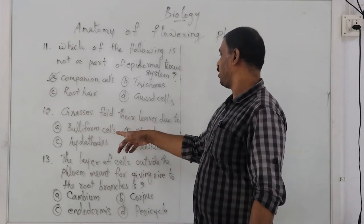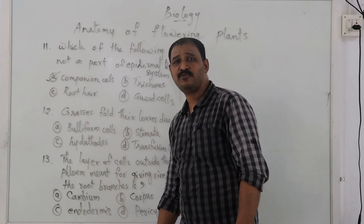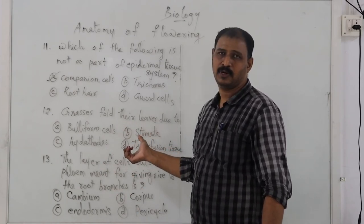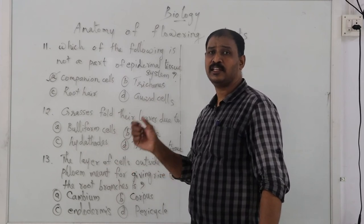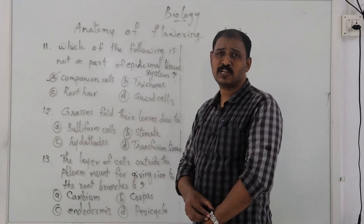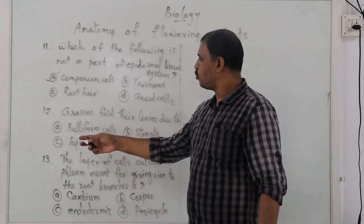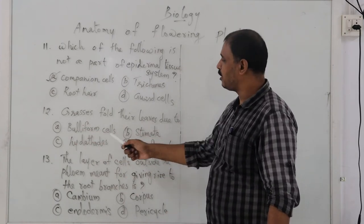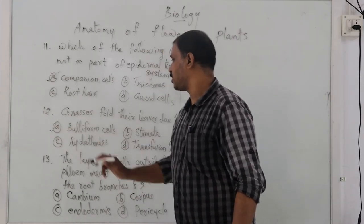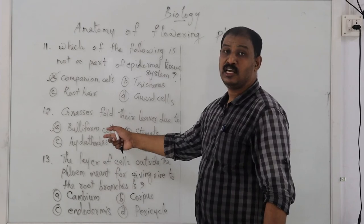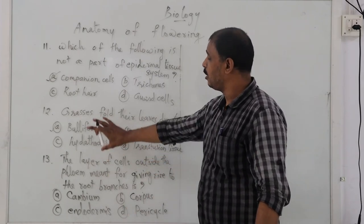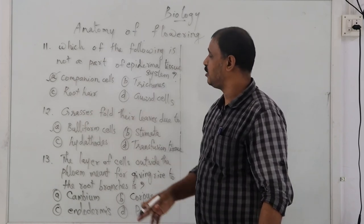Grasses fold their leaves due to which structure? The purpose of leaf rolling is to reduce surface area, reduce exposure to sunlight, and prevent water loss. Options: A — bulliform cells, B — stomata, C — hydathodes, D — transfusion tissue. The correct option is A — bulliform cells. Bulliform cells are responsible for leaf rolling; stomata, hydathodes, and transfusion tissue are not directly related to leaf folding.